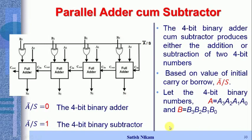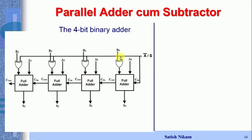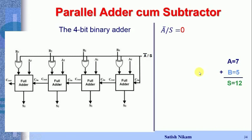Now we discuss the circuit with examples. First, for the adder circuit: to work as a four-bit binary adder, the /S bit should be 0. We take an example: adding A = 7 and B = 5, which should give S = 12.